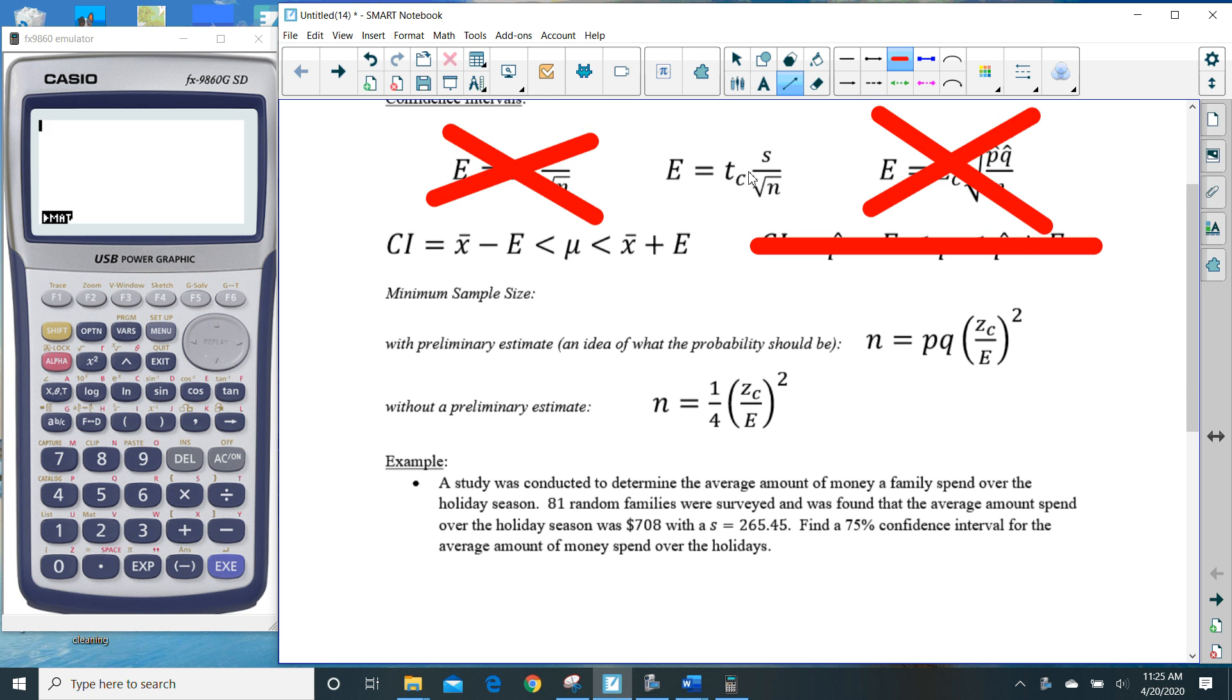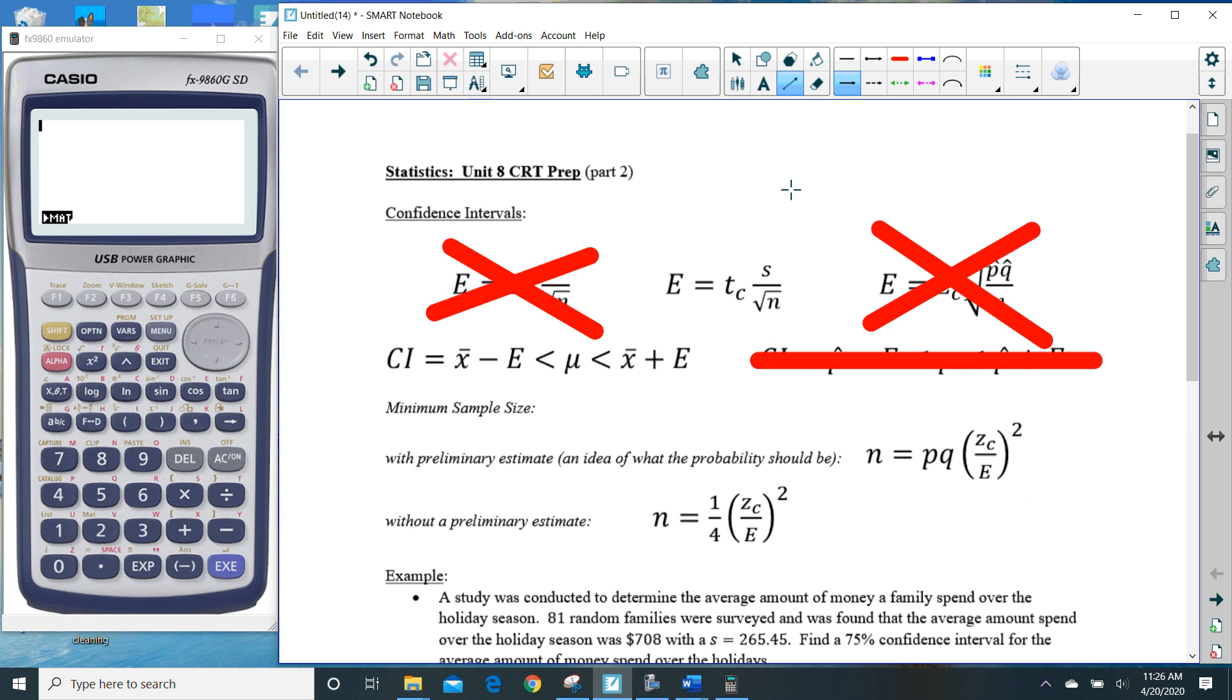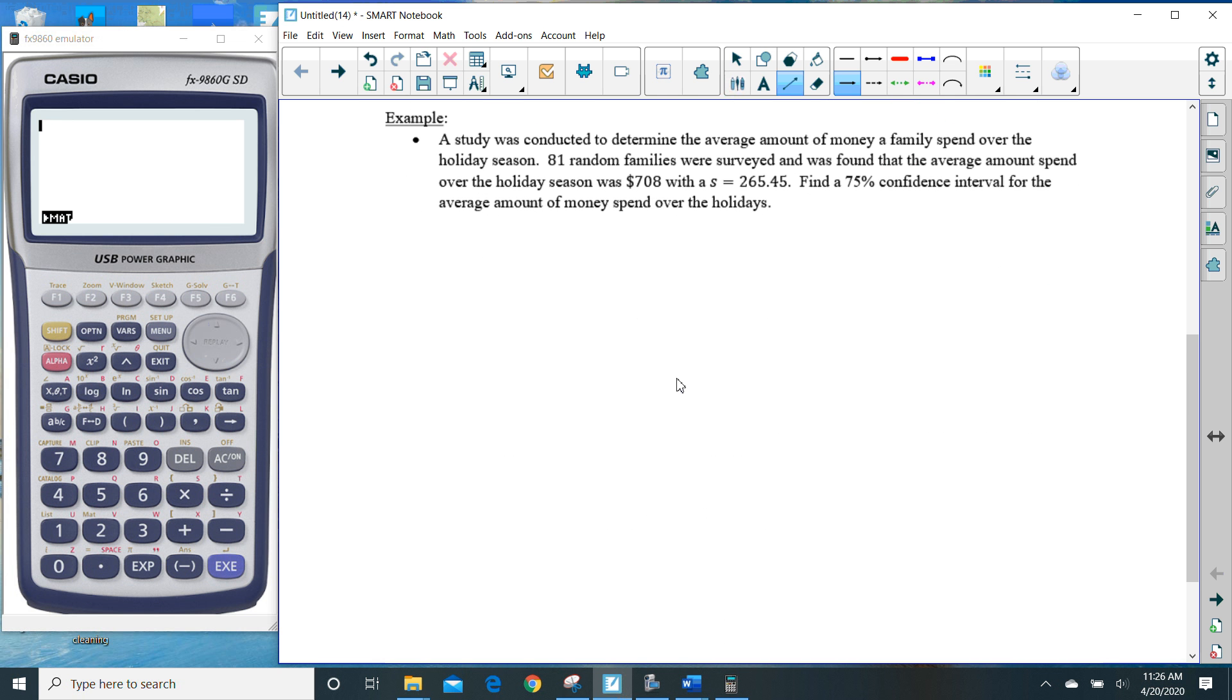What we are going to be dealing with in this lesson is this middle equation which has a sample standard deviation. And more importantly, it is dealing with a T_c because this is coming from a sample, not a sigma or a probability. So we have to use a T table. However, the confidence interval itself is going to be the same. So let's go ahead and take a look at our example and make some of these needed adjustments.